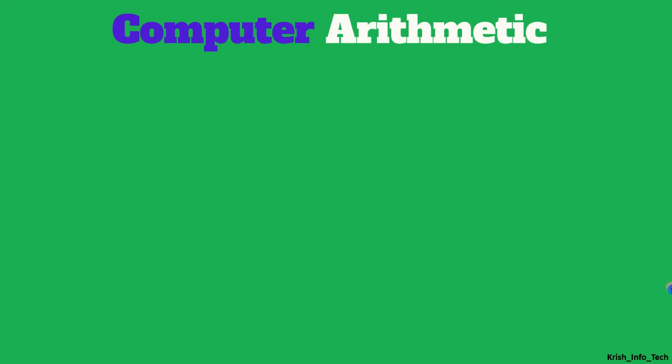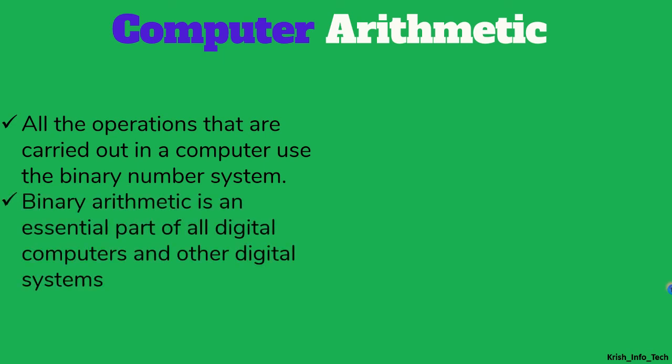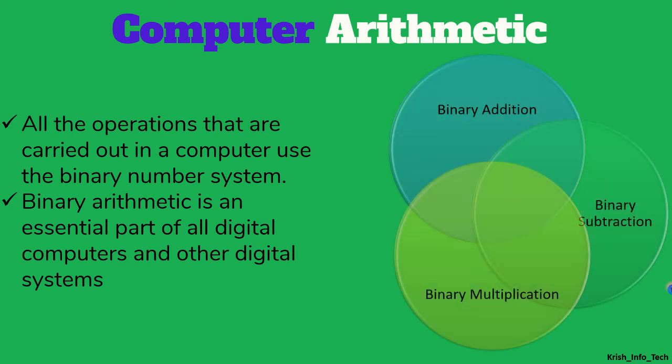Next, we are moving on to computer arithmetic, which is about binary arithmetic. Binary arithmetic is essential not only for all computers but also for all the machines we use at home. We have four types of arithmetic operations: binary addition, binary subtraction, multiplication, and division. In the next video, I will teach how to do binary addition and subtraction. Hope the types of number systems and the conversion of binary to decimal and decimal to binary are clear. We will meet in the next video. Thank you all. Happy learning.